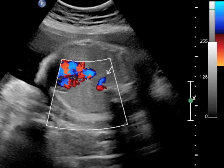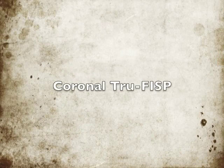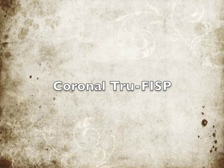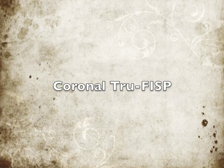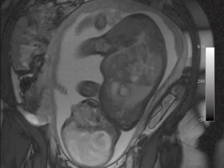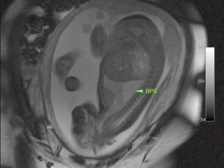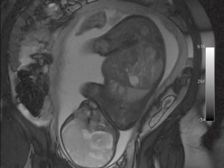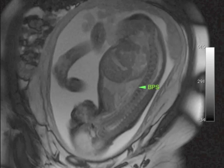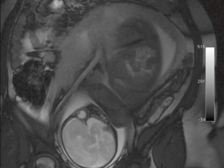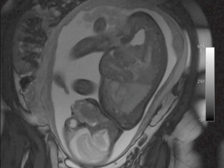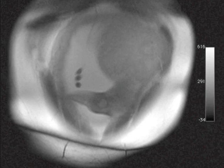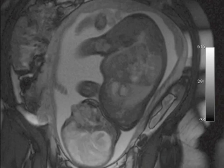After this was picked up on ultrasound, the mother went on to have a fetal MRI to further characterize this abnormality. A selected coronal image from the true FISP sequence nicely highlights the abnormality. The green arrowhead, labeled BPS for bronchopulmonary sequestration, is pointing to the wedge-shaped area of hyperintensity in the right lower lobe. Note that this segment is sitting superior to the much more hypointense liver.